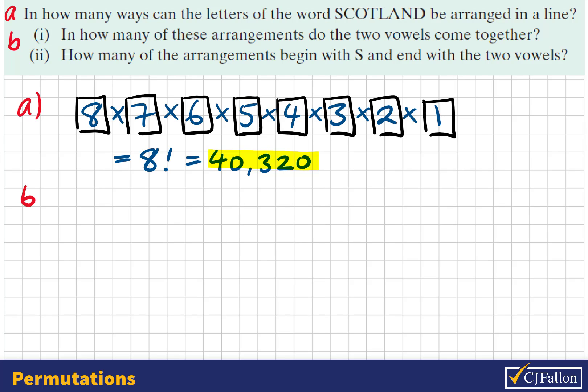In part B1, in how many of these arrangements do the two vowels come together? An effective strategy here is to treat the two vowels as if they were a single letter first, and then we'll consider both ways we could arrange them. So this time, we're going to create 7 tiles, one for each of the letters, including this single double vowel letter.